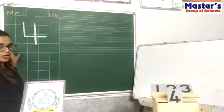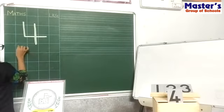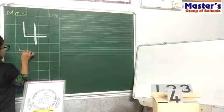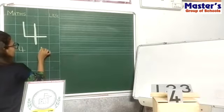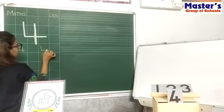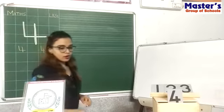In your notebook you have to write in this box, okay? Like this: standing line, sleeping line, standing line. Four. Standing line, sleeping line, standing line. Four.